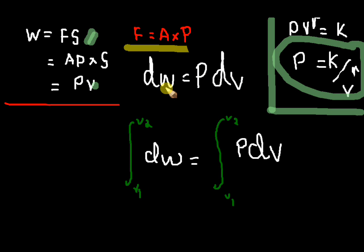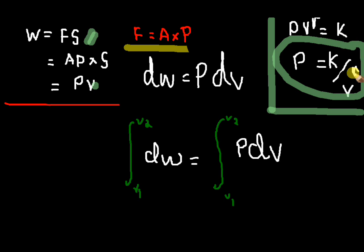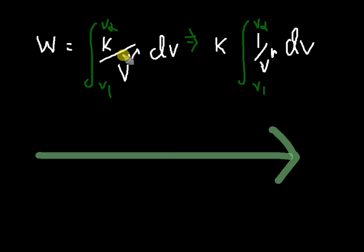So I am just integrating this equation in order to find the total work. We know that the integral of dW will be equal to the integral of P dV. We know that PV raised to gamma equals constant in an adiabatic process. So P can be written as k by V raised to gamma. I am going to substitute this equation for pressure, and by substituting it, I got a new relation.